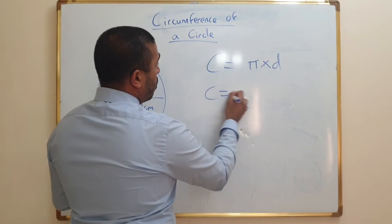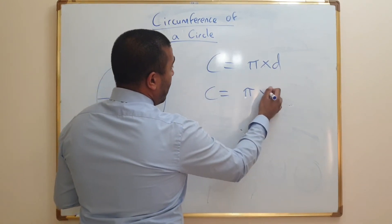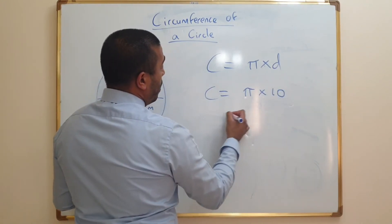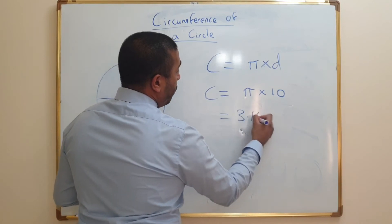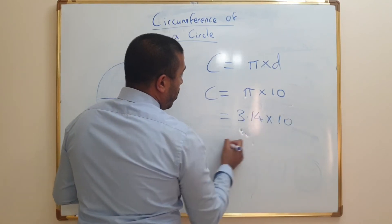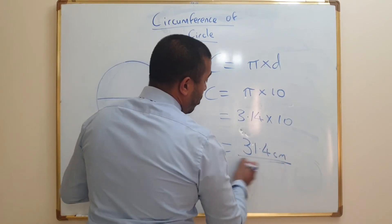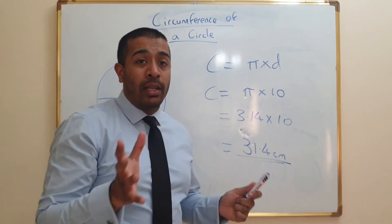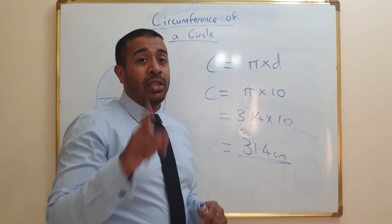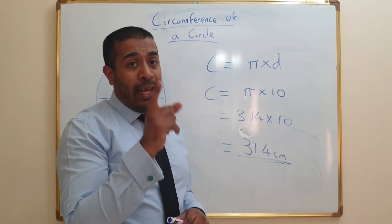The circumference is just going to be pi times 10, which is 3.14 times 10, which equals 31.4 centimeters. Don't forget, it's not squared because it's just a length. Squared is for area.